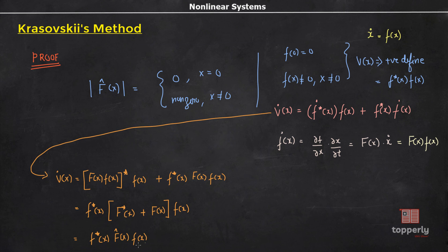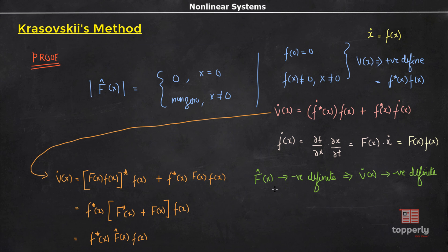This simplifies to F*(x)·F̂(x)·f(x). From this expression we can infer that if F̂(x) is negative definite, then v̇(x) will be negative definite. So, if F̂(x) is negative definite, then according to Krasovsky's theorem, if we choose v(x) = F*(x)·f(x), then v̇(x) will be negative definite and v(x) will be positive definite. Therefore, the system is Lyapunov stable.